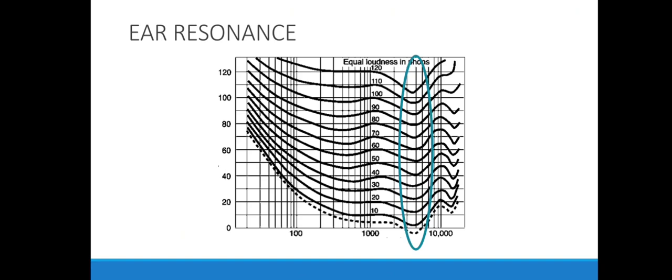There is also a dip toward the far right of the graph around 13,000 Hz, corresponding to the third harmonic of our ear's resonance. In contrast, moving toward the left end of the graph, the curves rise steeply, meaning bass frequencies must be very loud to be perceived — it's very difficult to hear faint bass.